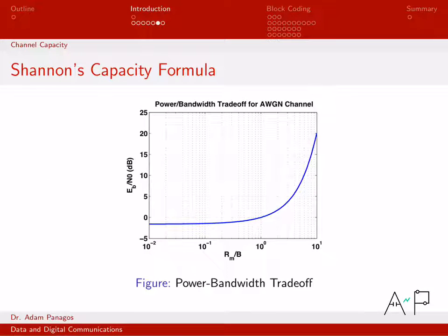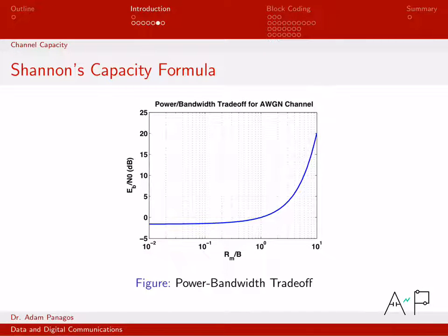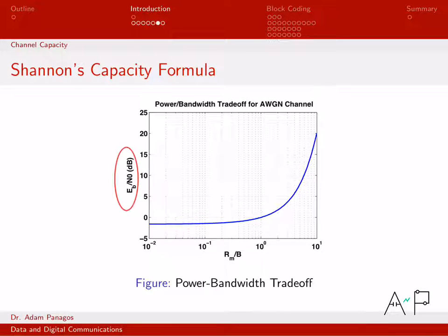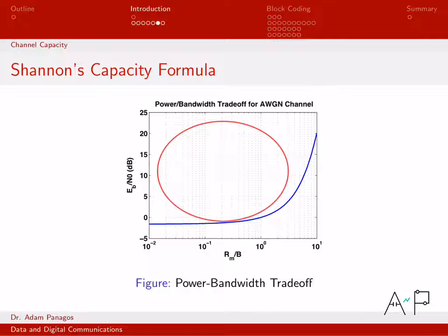This is a plot of SNR versus the ratio Rm/B. The blue curve is generated by picking a value for Rm/B, plugging into the equation to get Eb/N₀, converting that linear quantity to dB, and plotting the result. Picking another value of Rm/B and repeating traces out the full curve. What this blue curve sketches out in the SNR-versus-Rm/B coordinate system is the condition where channel capacity equals the data rate, dividing our world into two regions. Above and to the left of the blue curve, I am operating within channel capacity.